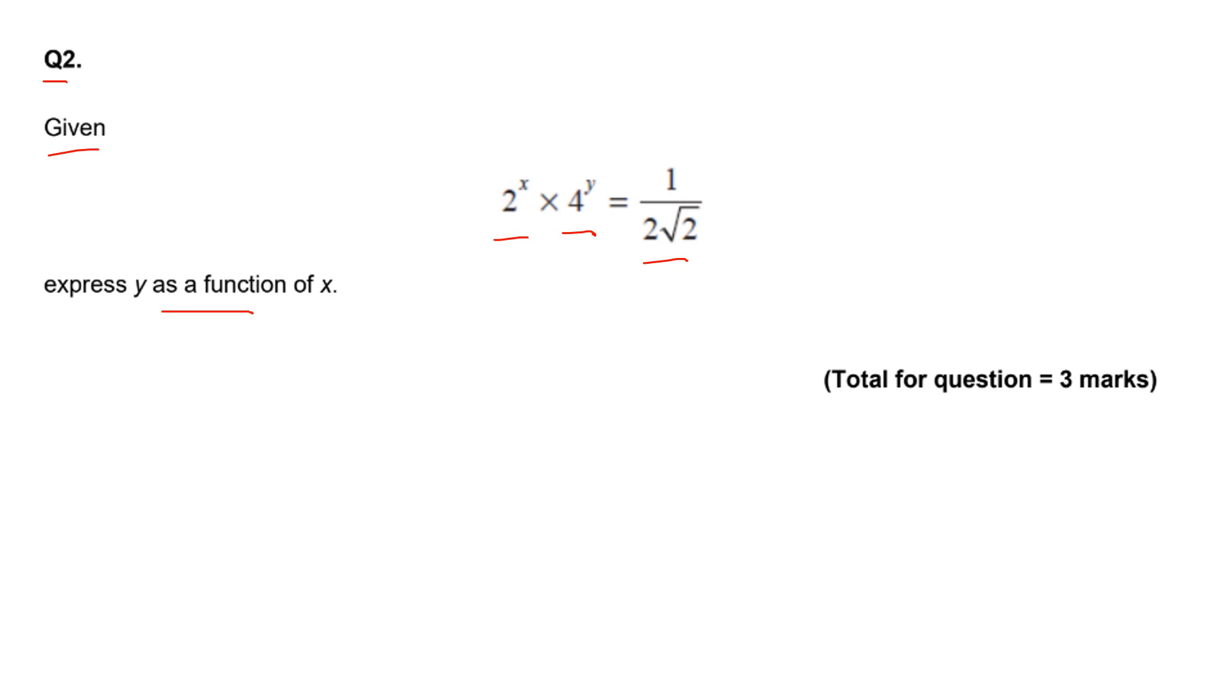Here we're going to write everything as powers of two, or base two. We've got 2 to the X, four can be written as two squared, we're going to multiply by two squared to the power of Y.